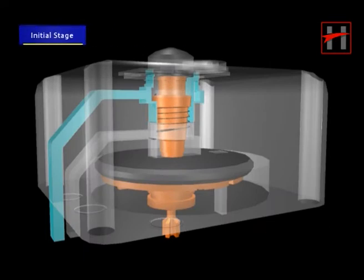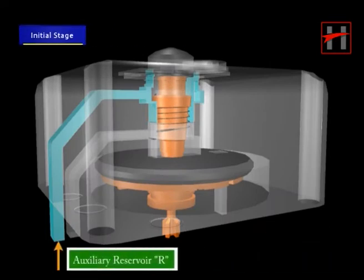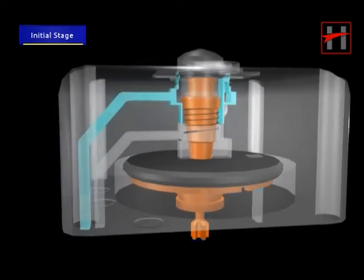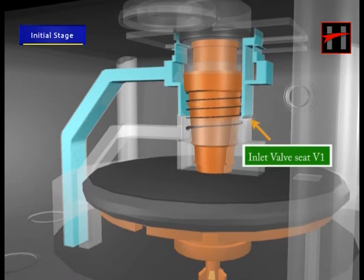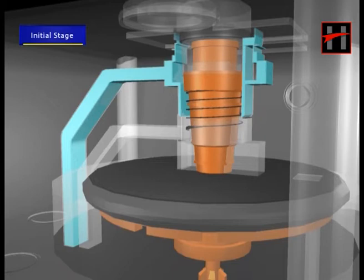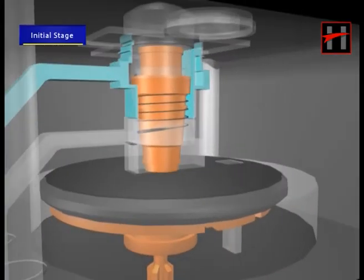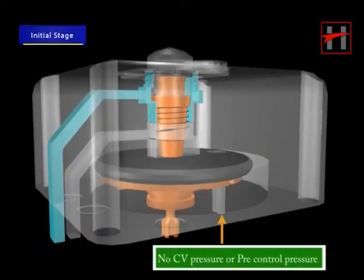In the initial stage, the pressure in the auxiliary reservoir R is applied to the inlet valve seat V1. The inlet valve seat remains closed by the thrust of the compression spring F. The outlet valve seat V2 remains in its venting position. In this stage, no pre-control pressure CV is applied.